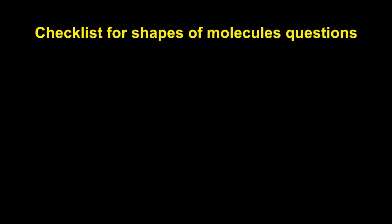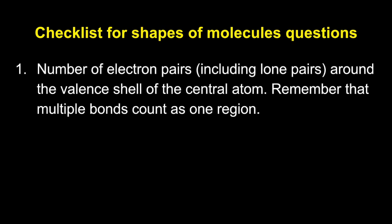So the main things are calling this the checklist for shapes of molecules questions. The first thing you need to talk about is how many electron pairs, including lone pairs, have you got around that valence shell of the central atom. And just remember, if you've got any multiple bonds in there, they count as one region of electron density, so just treat it as a pair of electrons.